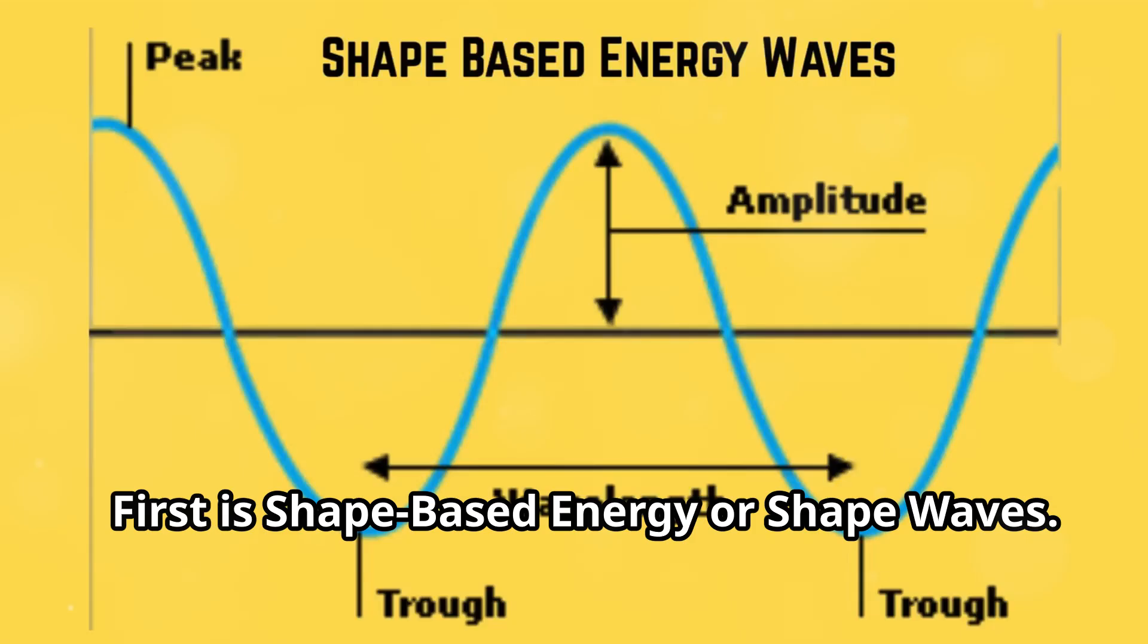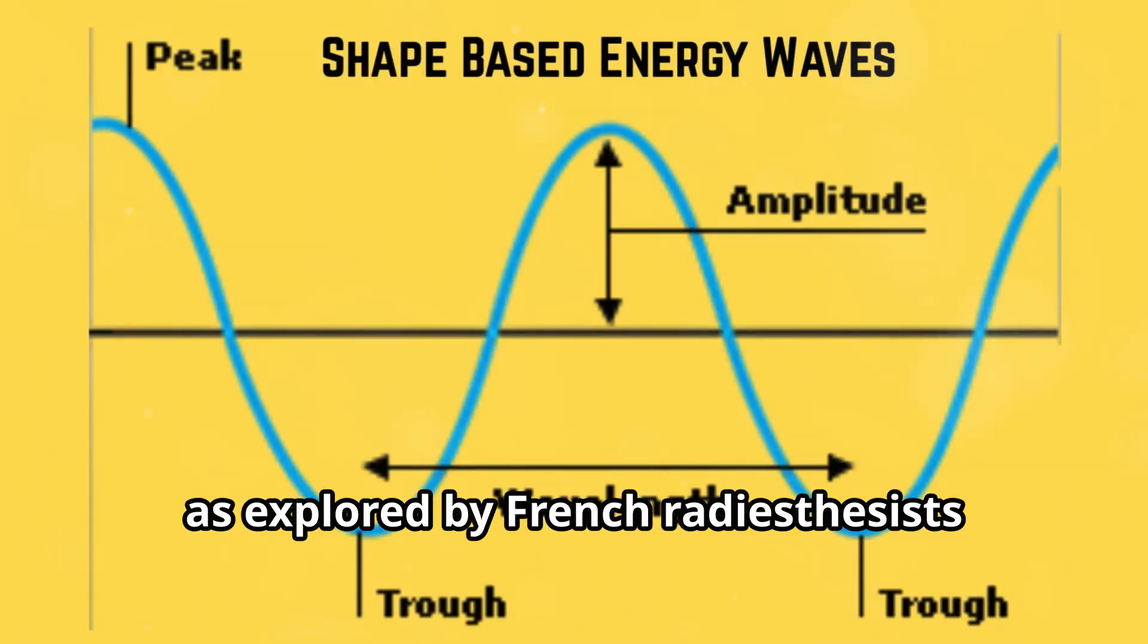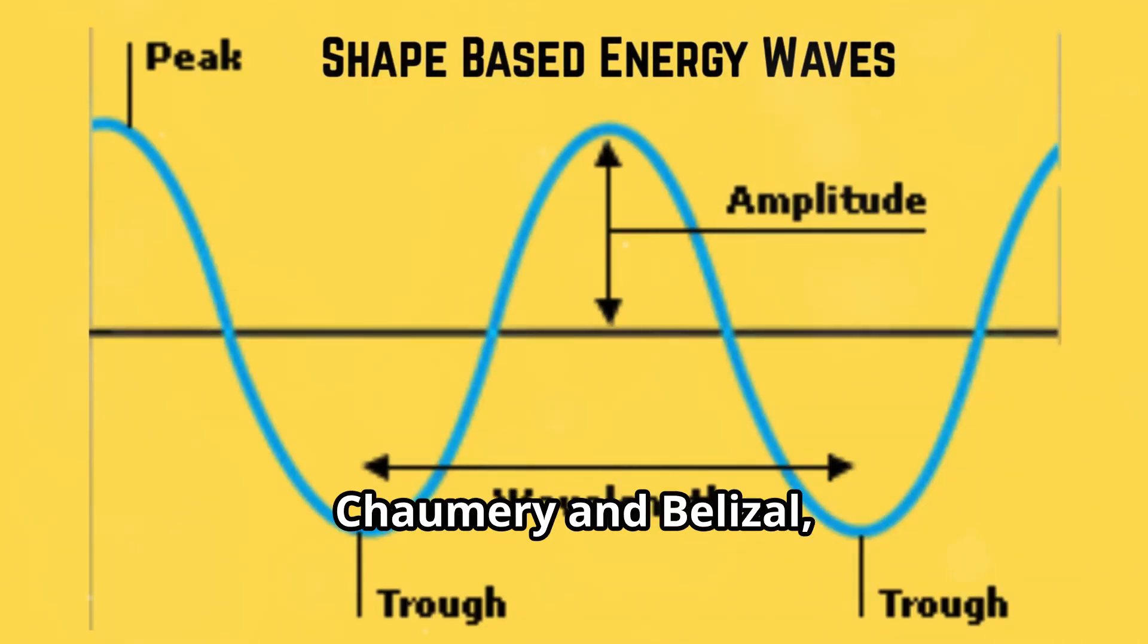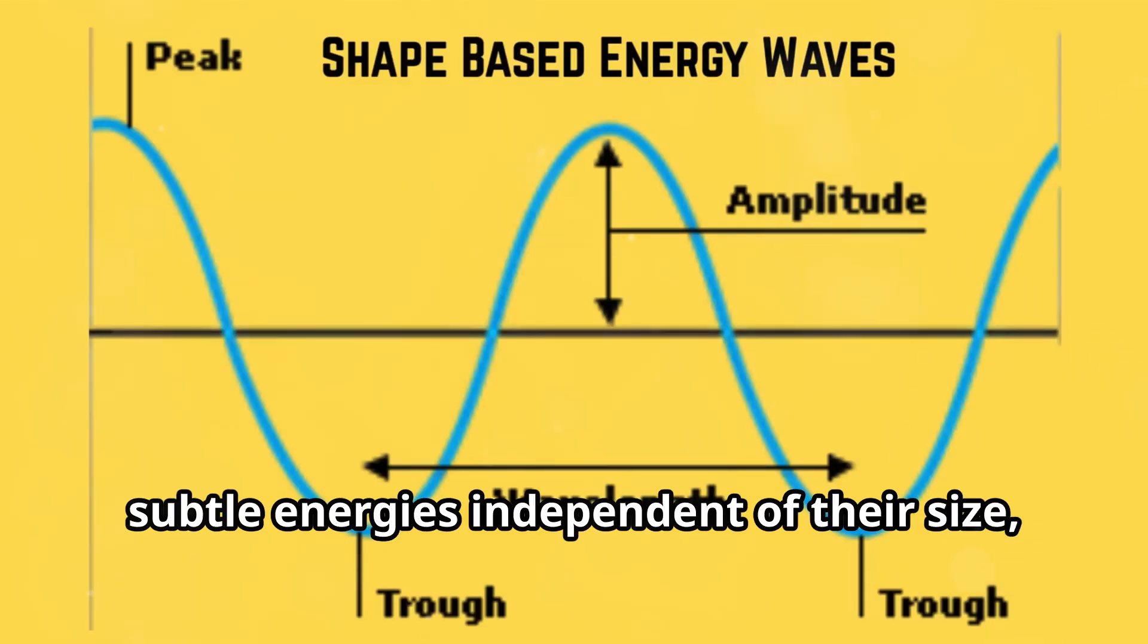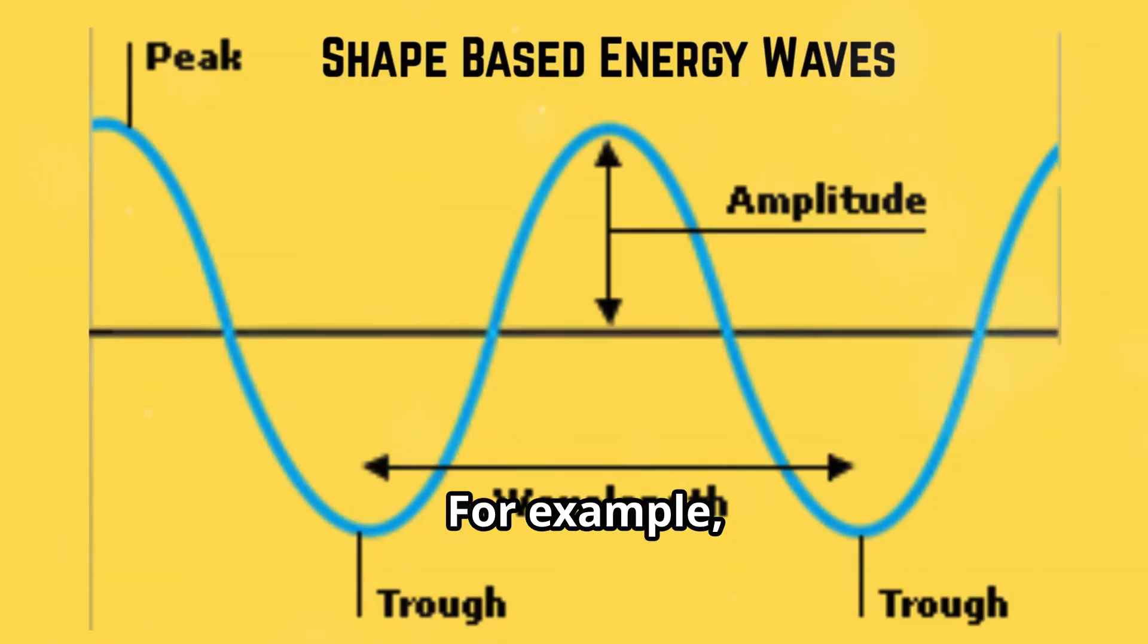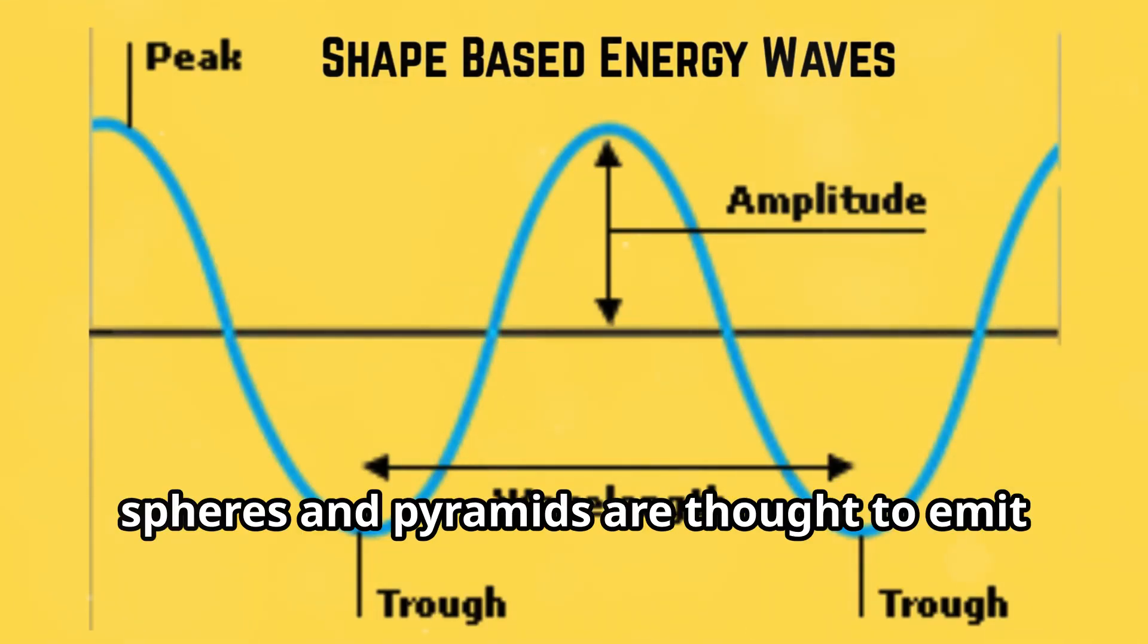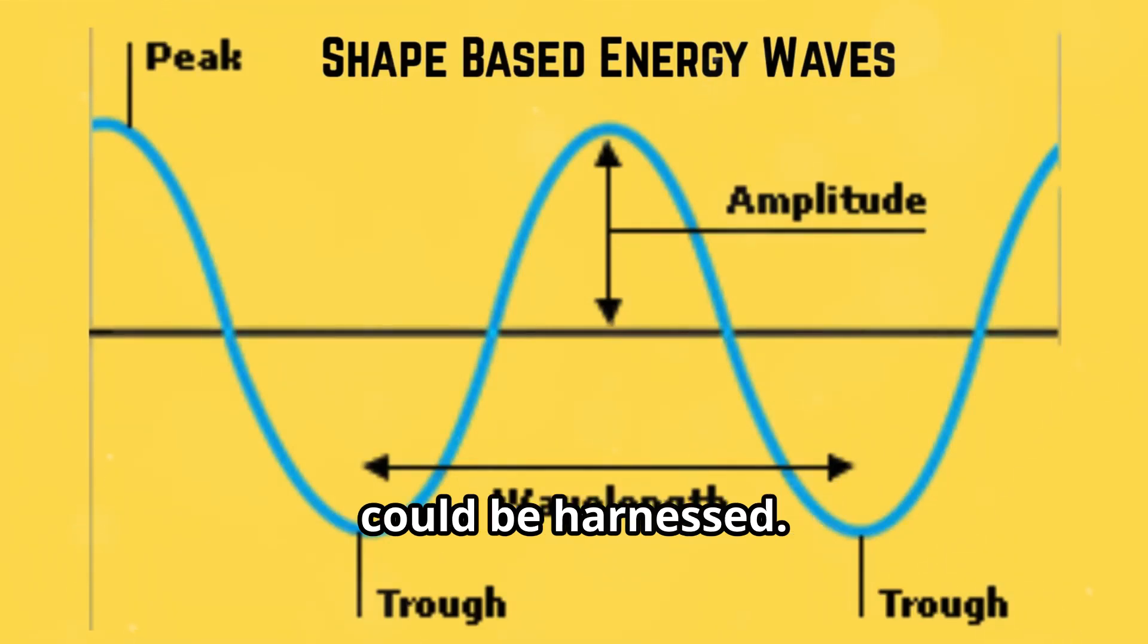First is shape-based energy or shape waves. Research into shape waves, as explored by French radiesthesists Chaumery and Belizal, suggest that geometric shapes emit subtle energies independent of their size, influenced by their form and orientation. For example, spheres and pyramids are thought to emit specific vibrational frequencies that could be harnessed.